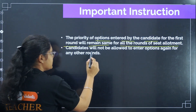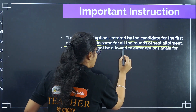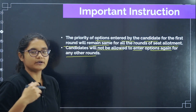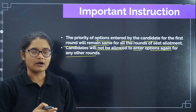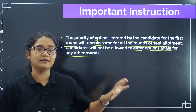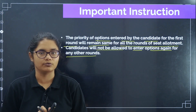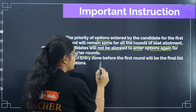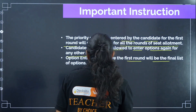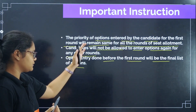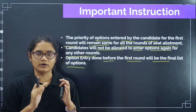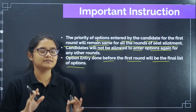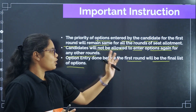Candidates will not be allowed to enter options again for any other round. After Round 1, you will not be allowed to enter any other options after the Round 1 results. The option entry done before the first round will be the final list of options — whatever option entry you do right now before Round 1 is the final option list.